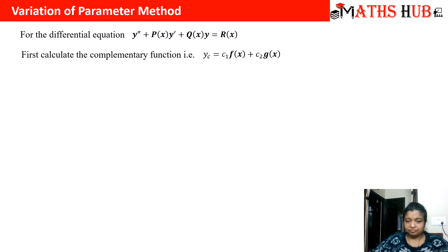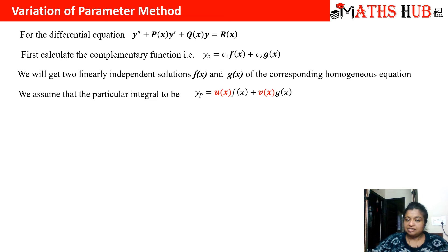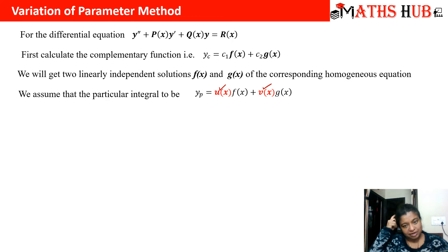f(x) and g(x) can be any function — exponential, sine, cosine — depending upon the nature of the roots. Taking this into consideration, we assume our particular solution by replacing the constants c₁ and c₂ with some functions u(x) and v(x). So f(x) and g(x) are known to us, but we have to calculate u(x) and v(x).